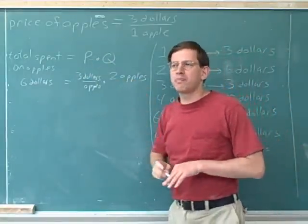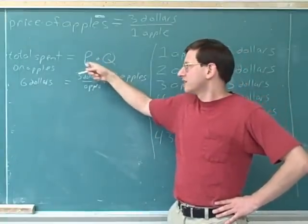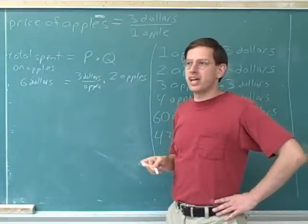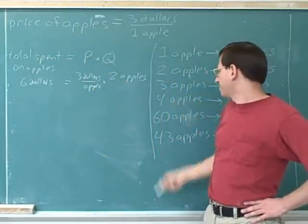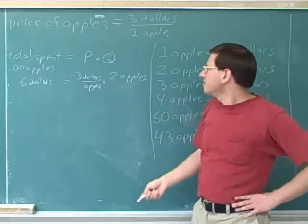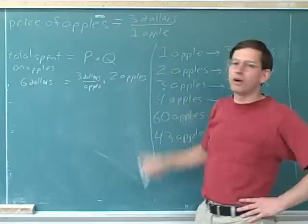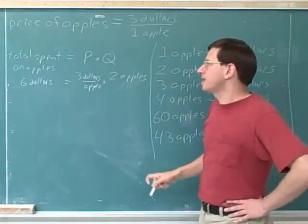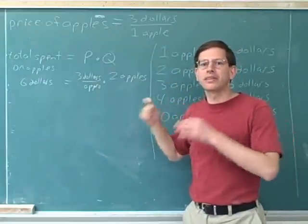But the important thing I want to point out is that you really shouldn't need to use this algebraic equation to figure out how much you're spending on apples. You shouldn't have to go onto the internet and look up the formula for total spent to figure out how much you're spending on apples if you buy four apples at $3 per apple, because it's really just common sense. If you understand what this ratio unit means — that you're going to spend $3 on one apple — it should just be common sense that four apples would cost you $12. There shouldn't be any need to look up this formula; we can do all this without the actual formula.